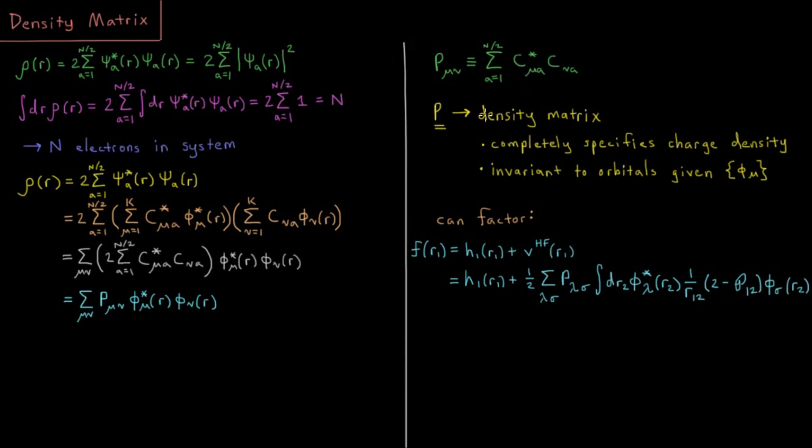P, as I mentioned, is called the density matrix. It is all that is necessary given a basis set to completely specify the charge density of that molecule. The density matrix has a nice property that it is actually invariant to all the orbitals that we have given a particular basis set.